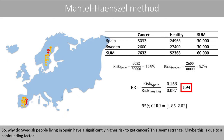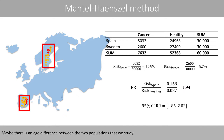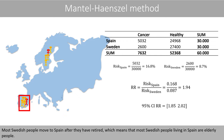Maybe this is due to a confounding factor. Maybe there is an age difference between the two populations we studied. Most Swedish people moved to Spain after they retired, which means that most Swedish people living in Spain are elderly people.